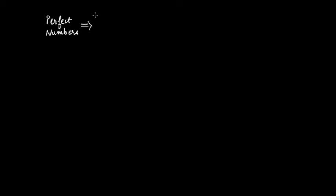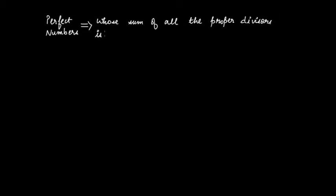In the last video, we learned about proper divisors. So now let's move to perfect numbers. If you are asked whether any given number is perfect or not, the perfect numbers are those numbers whose sum of all the proper divisors is equal to that number itself.